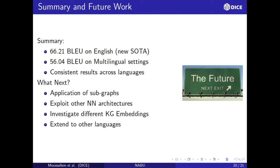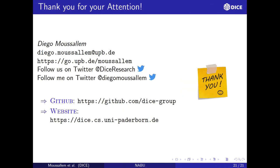As a summary, NABU achieved 66.21 BLEU on English, setting a new state of the art for the RDF-to-text task. NABU can also serve as a multilingual baseline for further research, achieving 56.04 BLEU and good results on METEOR and chrF, with consistent results across languages. What's next: we plan to apply subgraphs on the encoder side, exploit additional neural network architectures, investigate different knowledge graph embeddings, and extend NABU to other languages. Please refer to our GitHub to try out NABU and our website to keep posted with our research. Thank you.